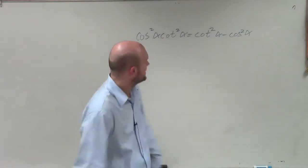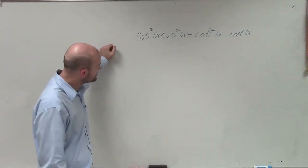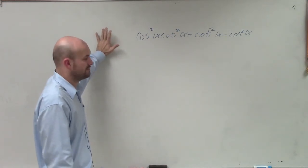Welcome. All right, so what we have here is cosine squared of alpha times cotangent squared of alpha equals cotangent squared of alpha minus cosine squared of alpha.